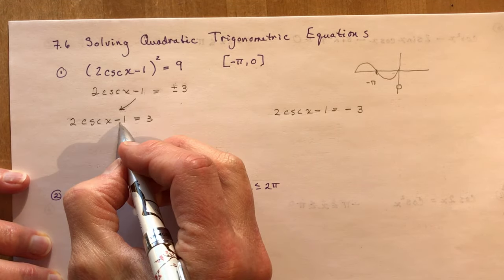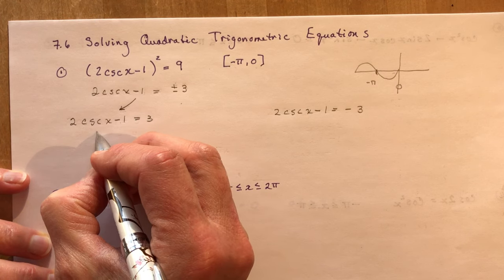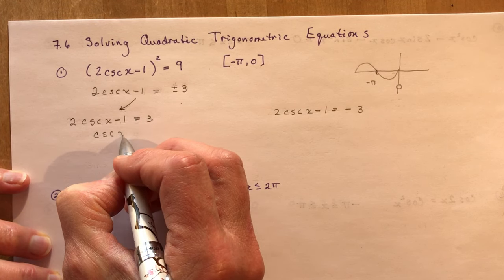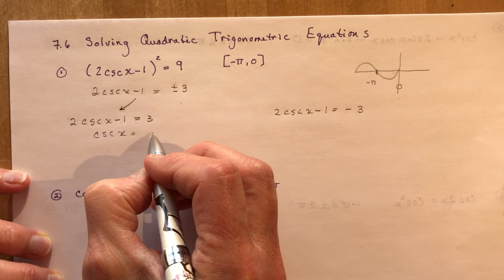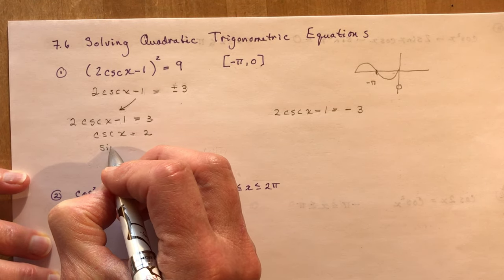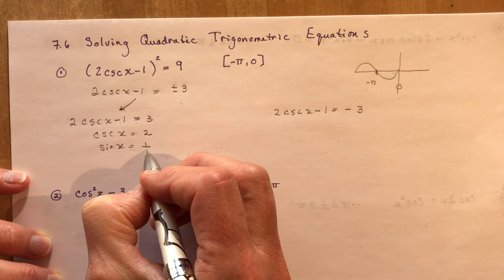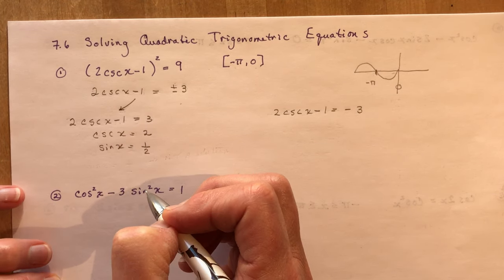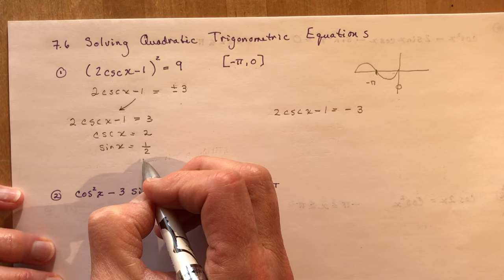From the first equation, bringing the 1 over gives 4, dividing by 2 gives cosecant x equals 2. So that means sine x equals 1 half — it's 1 over cosecant.